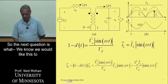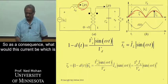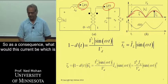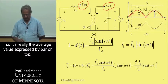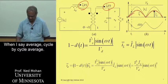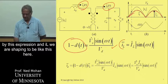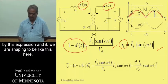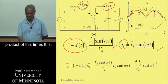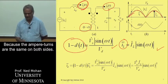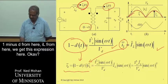The next question is: we would like IL to be a sinusoidal rectified sine wave like this. As a consequence, what would the current ID be — flowing through the diode into the output stage — neglecting the ripple, so it's really the cycle-by-cycle average? We had calculated that (1 minus D) is given by this expression, and IL is being shaped like this. Looking at the circuit, the current ID is equal to the product of (1 minus D) and IL, because the ampere-turns are the same on both sides. Plugging in the values, we get this expression.